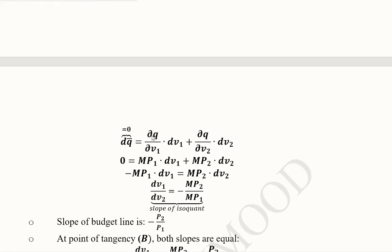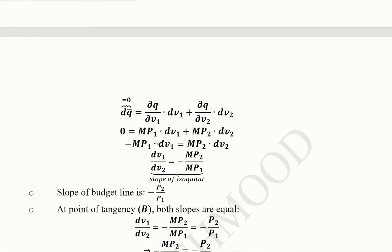Now we repeat the same process for the second variable, V2. And when we do, we get this expression. We can write this term as MP1 because this is the derivative of the dependent variable with respect to the independent variable V1, so it can be the marginal product of V1.